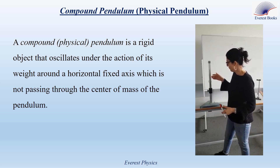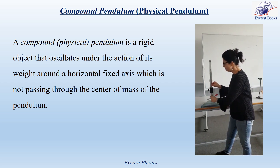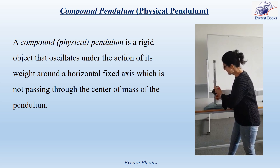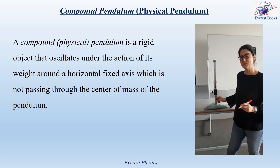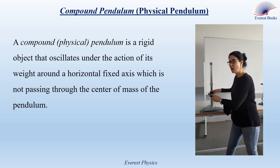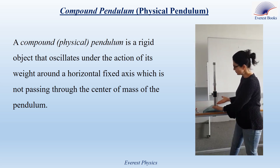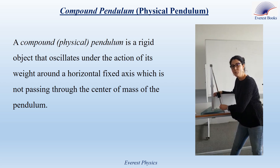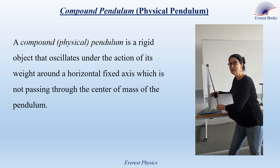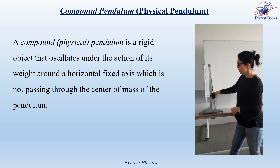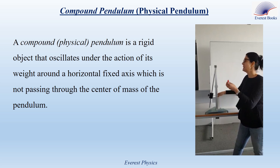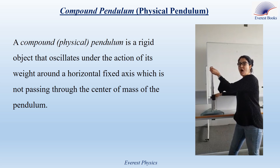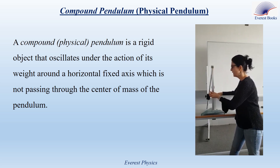Our physical pendulum consists of a rigid rod with an object fixed at a certain position. The center of mass of our pendulum is at a specific location. The pendulum starts in its stable equilibrium position. We displace it from this stable equilibrium position and release it from rest. As you see, the pendulum oscillates about a horizontal axis which passes through the upper end of the pendulum but not through its center of mass.